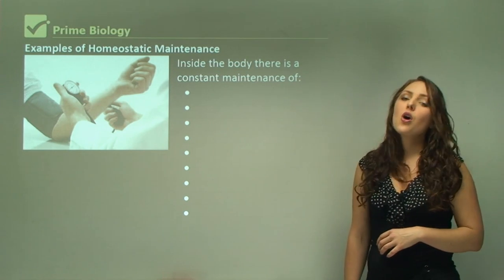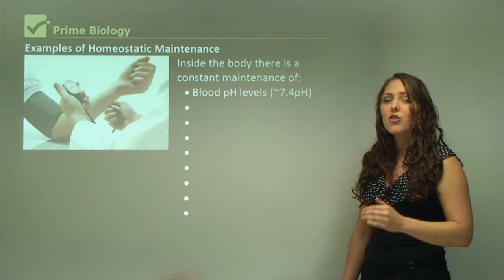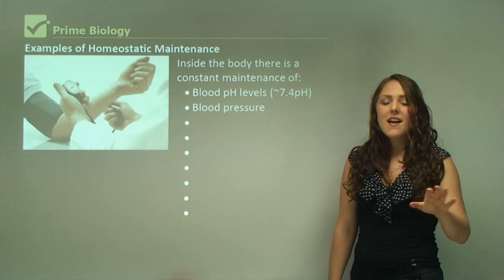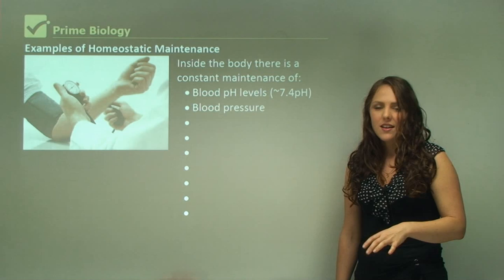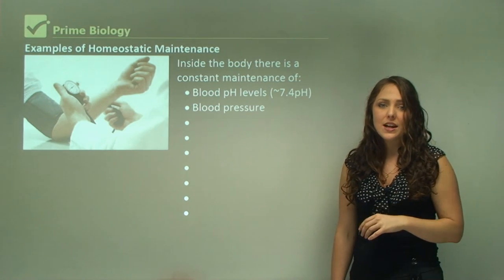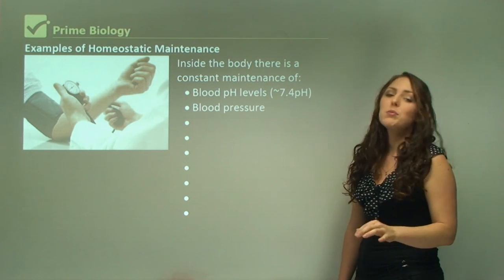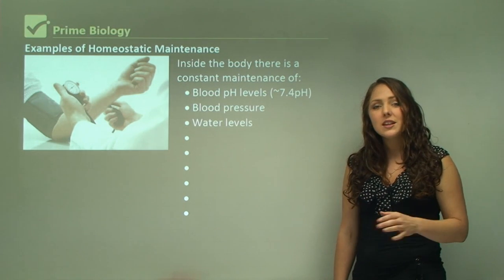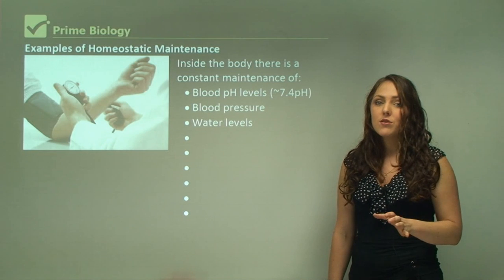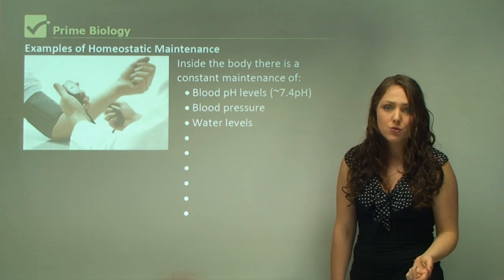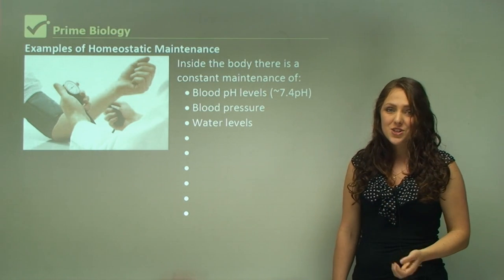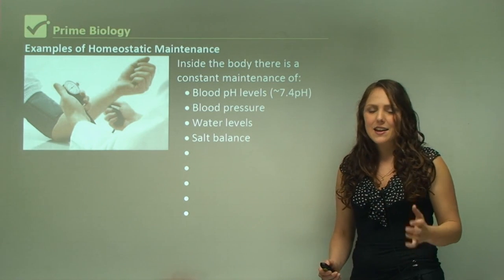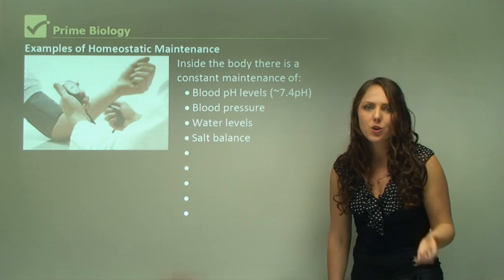Inside the body, there is constant maintenance of several variables. Blood pH must be around 7.4 — outside this range it can be toxic. Normal blood pressure is around 120 over 80, though there is a natural range; extreme high blood pressure is more harmful. Water levels are maintained — we typically need about 2 litres of water per day from water, drinks, or foods like fruits and vegetables. Salt balance is also important and helps maintain water levels in the body.